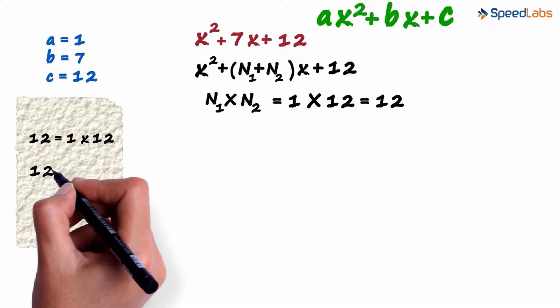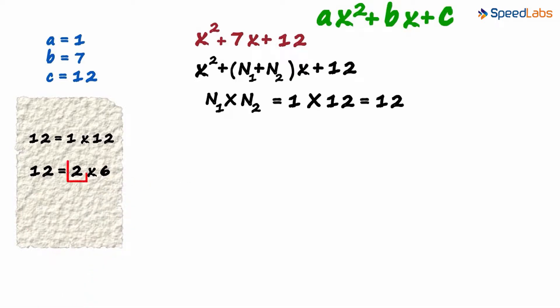12 can also be written as 2 times 6. Again, the sum of 2 and 6 is 8 and what we are looking for is 7. Even these two numbers are ruled out. Do we have any other product combinations for 12? Yes, there is.